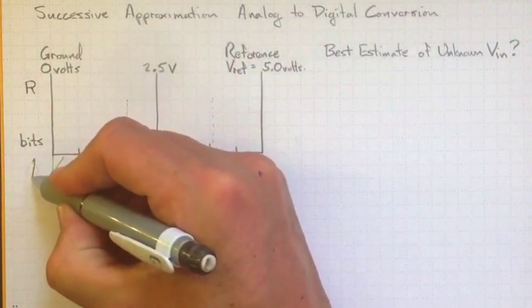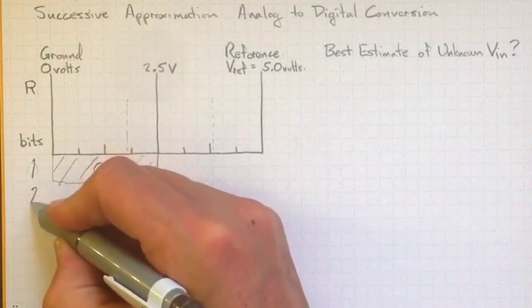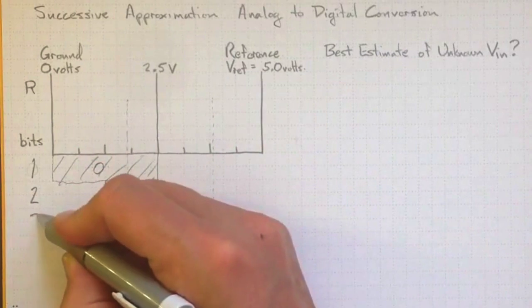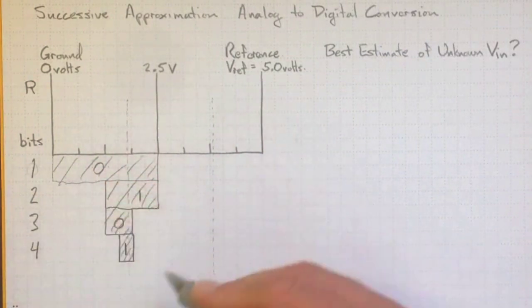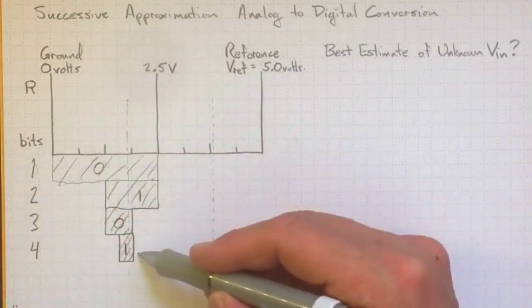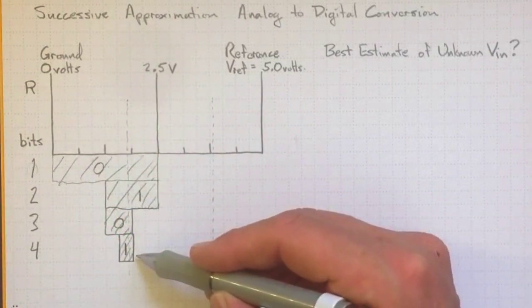We got one bit of information there, two bits when we did it again, three bits total when we did it again, and now four bits. So we'll stop after four bits of conversion, just for this example.